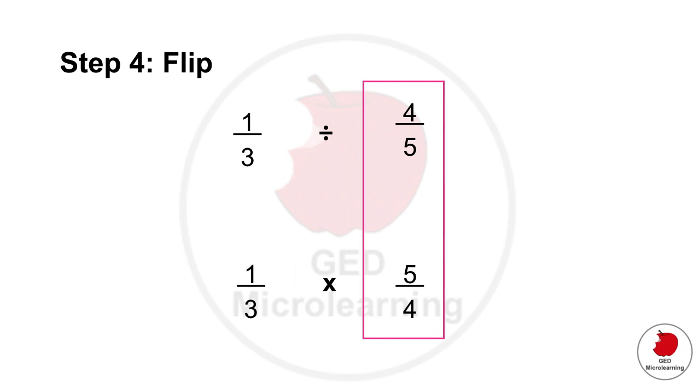And the reciprocal is basically a fancy term for a fraction that you flipped on itself. So the reciprocal of four over five would be five over four, that same fraction flipped over.